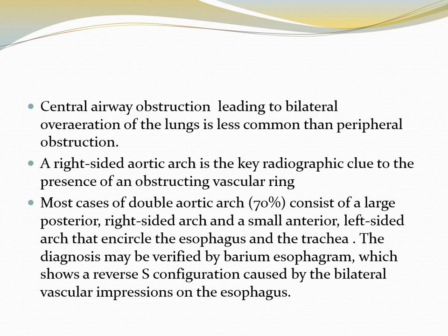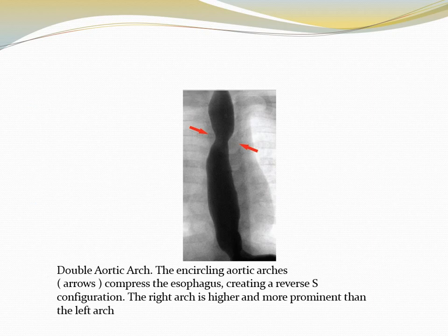Central airway obstruction leading to bilateral over-aeration is less common than peripheral obstruction. A right-sided aortic arch is the key radiographic clue to the presence of an obstructive vascular ring. Most cases of double aortic arch — 70% — consist of a large posterior right-sided arch and small anterior left-sided arch that encircle the esophagus and trachea. The diagnosis may be verified by barium esophagram, which shows a reverse S configuration caused by bilateral vascular impression on the esophagus.